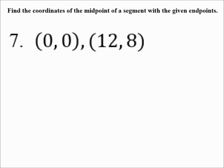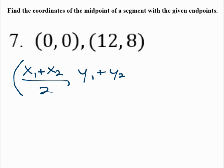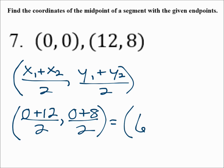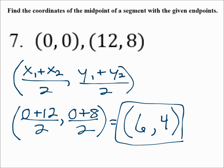Number 7: find the coordinates of the midpoint of a segment with endpoints (0, 0) and (12, 8). Use the midpoint formula. X1 is 0 plus X2 which is 12, divided by 2. Y1 is 0 plus Y2 which is 8, divided by 2. 0 plus 12 is 12, divided by 2 is 6. 0 plus 8 is 8, divided by 2 is 4. So the midpoint is the point (6, 4).